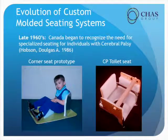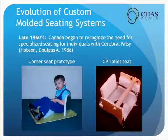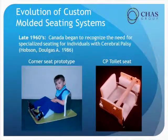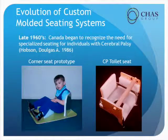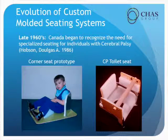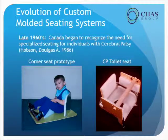Here are some great pictures I found. In the late 1960s in Canada, they began to recognize the need for individualized seating for cerebral palsy. You'll see here a corner seat prototype and an early positioning toilet seat for a child with CP.